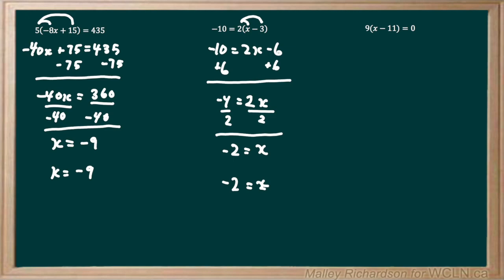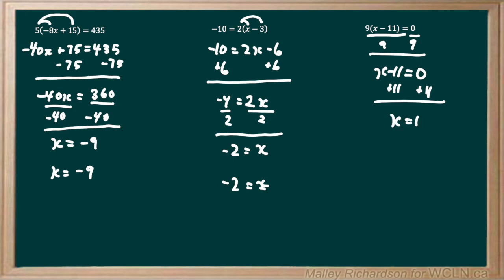In our final example, we have 9 multiplied by, in brackets, x minus 11, equals 0. I'm going to start with the first method by dividing both sides by 9. Now we have x minus 11 equals 0 divided by 9, which is just 0. So to isolate for x, we're going to add 11 to both sides, and we're left with x equals 11.